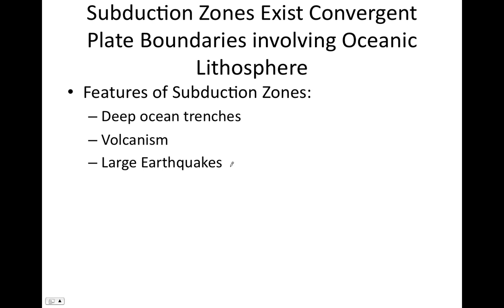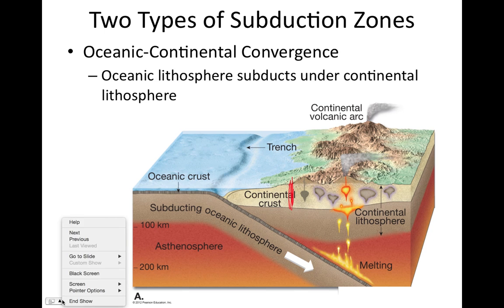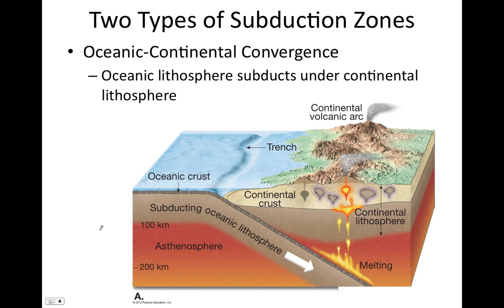The first type of subduction zone occurs whenever we have oceanic lithosphere converging with continental lithosphere. In this case, oceanic lithosphere always subducts under continental lithosphere. Why? Because continental lithosphere has thick continental crust that is relatively low-density rock — mostly granite — and because it's low-density and very thick, it's too buoyant to sink. Continental lithosphere never subducts, never sinks. Once at the surface, it remains at the surface.